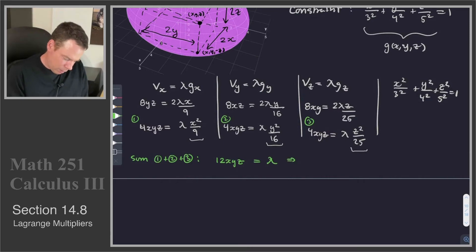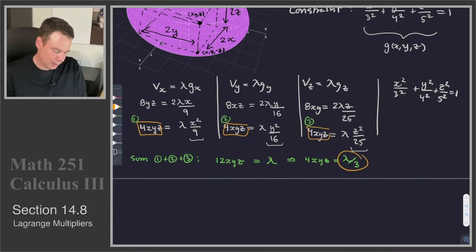And even more than that, I can divide through by 3, and I get 4xyz = λ/3. That's pretty handy, because I have 4xyz in all of these things, and now that tells me I can just replace those with λ/3s.